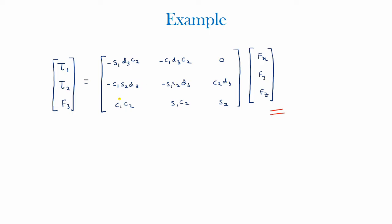That's it. So by multiplying out these two matrices, you can get three equations for torque 1, torque 2, and your force 3 in terms of Fx, Fy, and Fz. So just as an example, I will show you for force 3, it would be equal to cos θ₁ cos θ₂ Fx + sin θ₁ cos θ₂ Fy + sin θ₂ Fz. Similarly, you can find the other two equations for the torques.